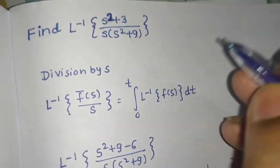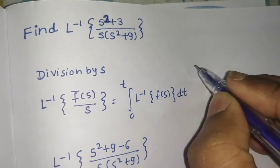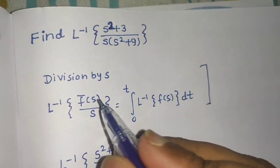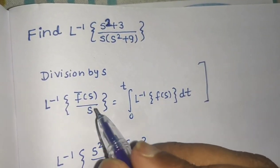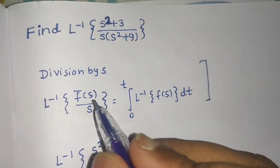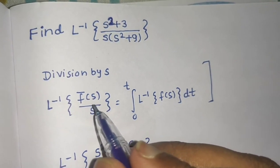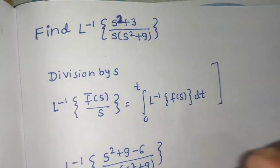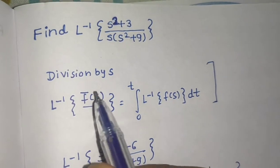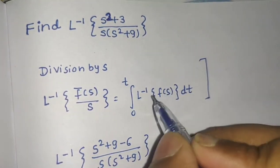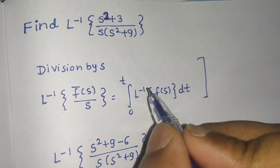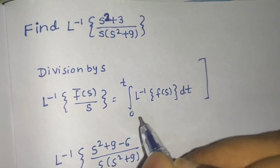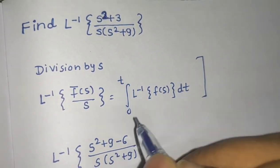At the end of the day, remember this rule: if you are dividing the Laplace transform of something by s, the Laplace inverse is obtained by integrating the Laplace inverse of the numerator from 0 to t with respect to t.